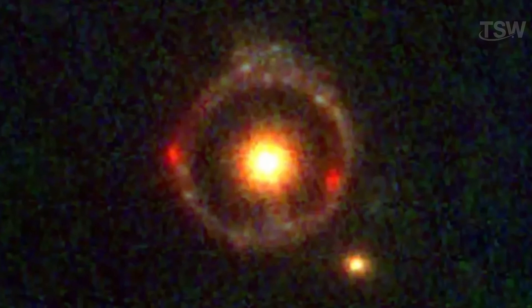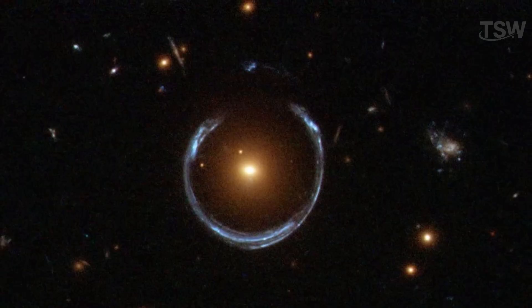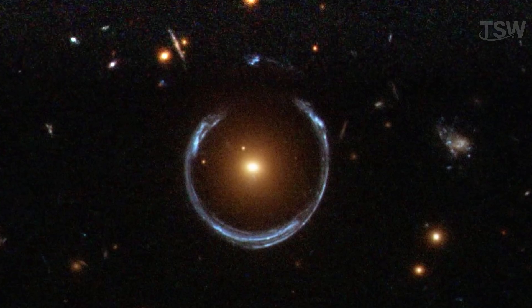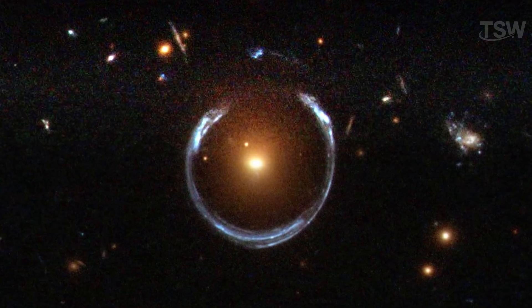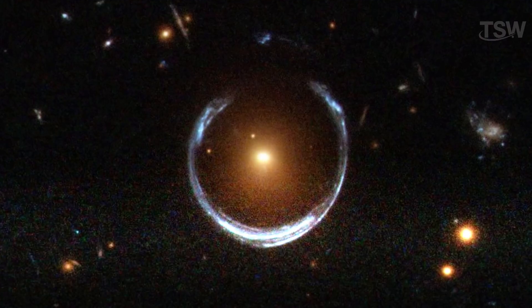In extremely rare cases, when the alignment between the light source, the massive object, and the observer is almost perfect, the light bends symmetrically around the massive body. The result is a complete ring of light known as an Einstein ring, one of the most stunning images in the cosmos.